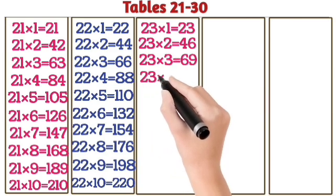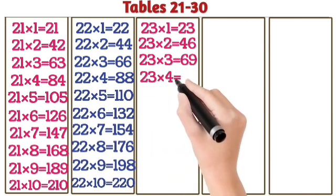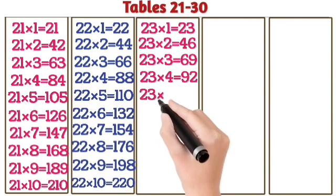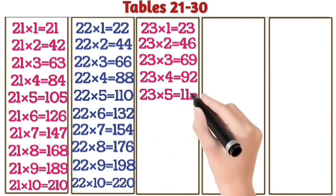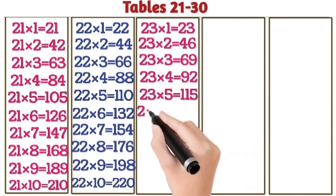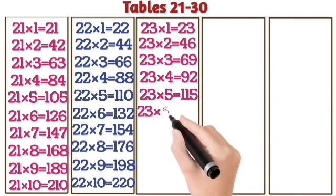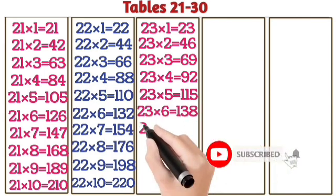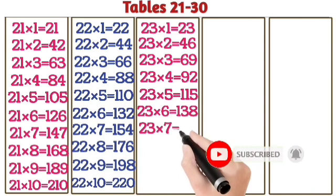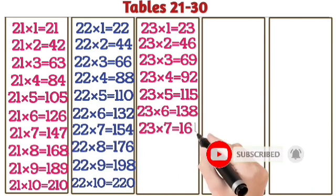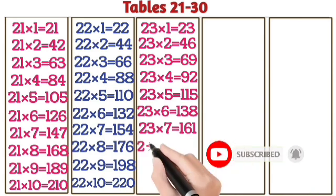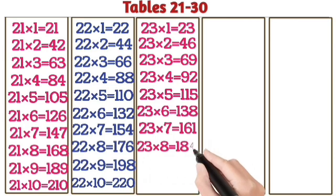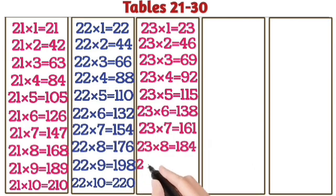23 ones are 23. 23 twos are 46. 23 threes are 69. 23 fours are 92. 23 fives are 115. 23 sixes are 138. 23 sevens are 161. 23 eights are 184.